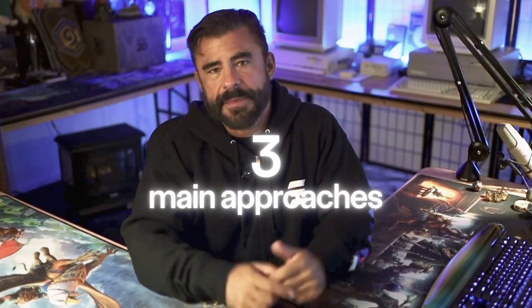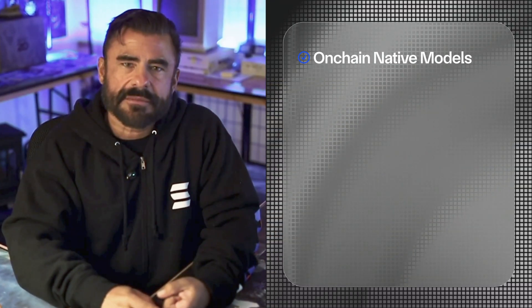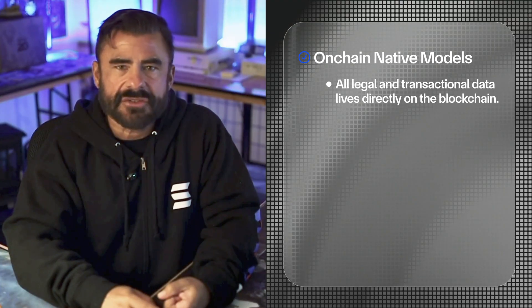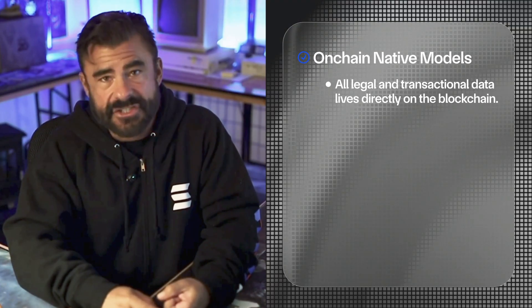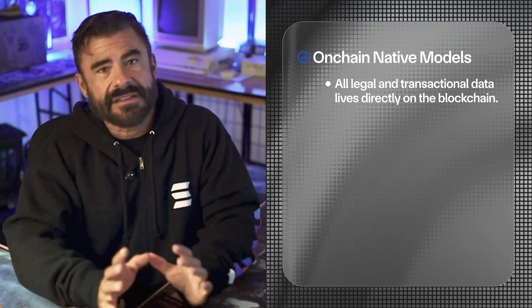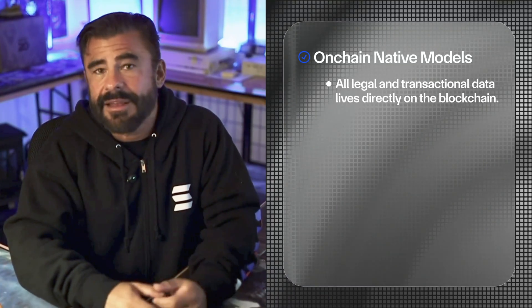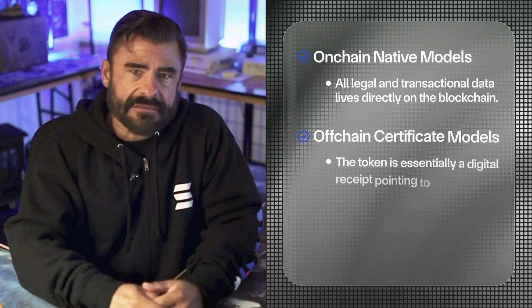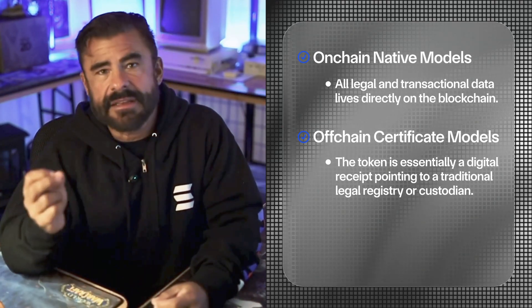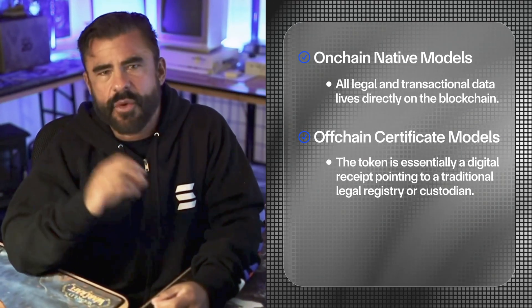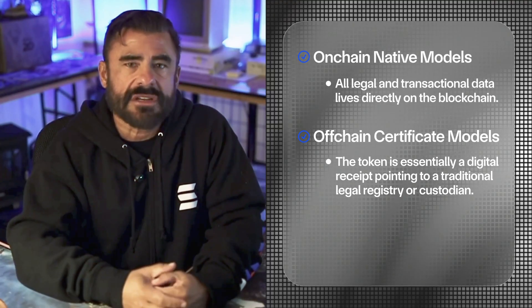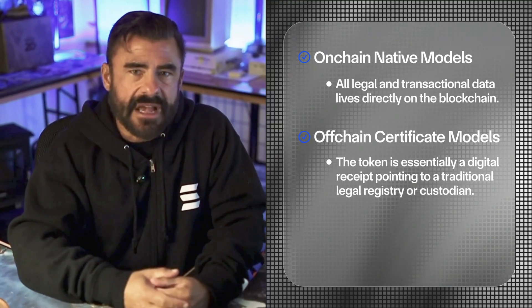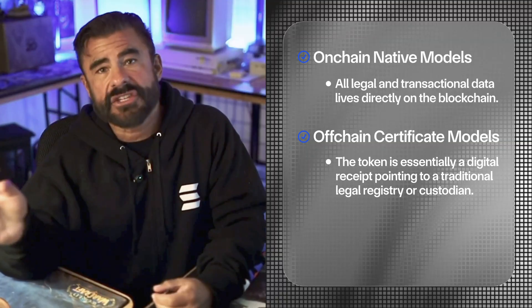Let's start with the architecture models for tokenized assets. There are three main approaches. First, on-chain native models, where all legal and transactional data lives directly on the blockchain. The smart contract itself encodes who owns what and under what rules. Second, off-chain certificate models, where the token is essentially a digital receipt pointing to a traditional legal registry or custodian. The actual legal title remains in that off-chain system.